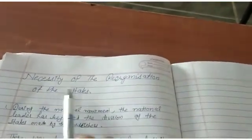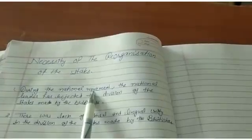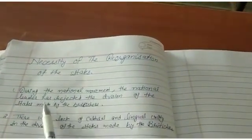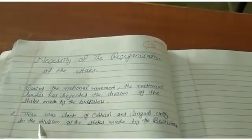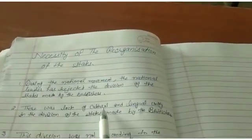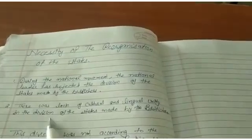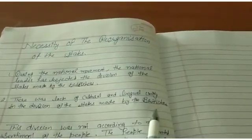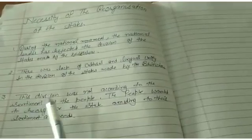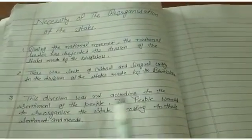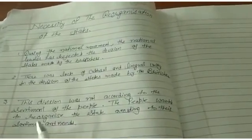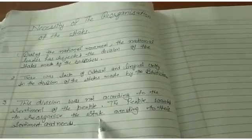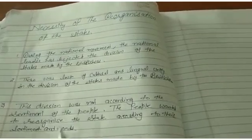Necessity of the reorganization of the state. During the national movement, the national leaders rejected the division of the states made by the British. There was lack of cultural and lingual unity in the division of the states made by the British. This division was not according to the sentiment of the peoples. The people wanted to reorganize the state according to their sentiment and needs.